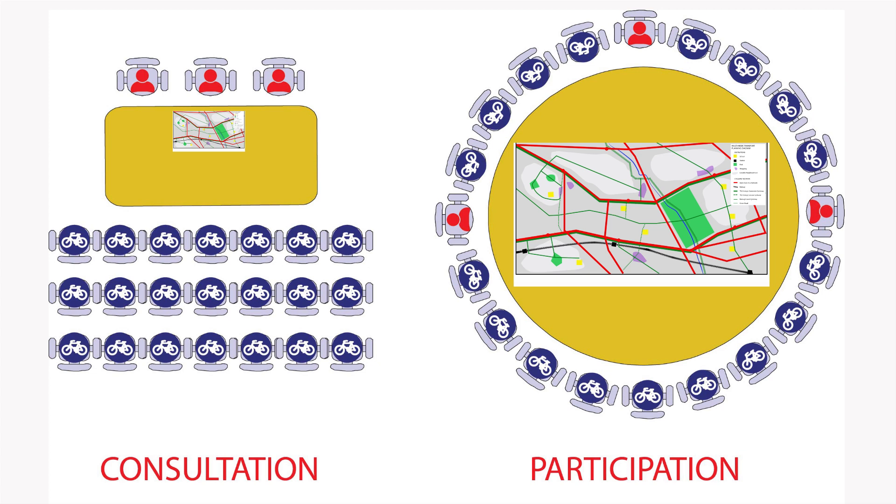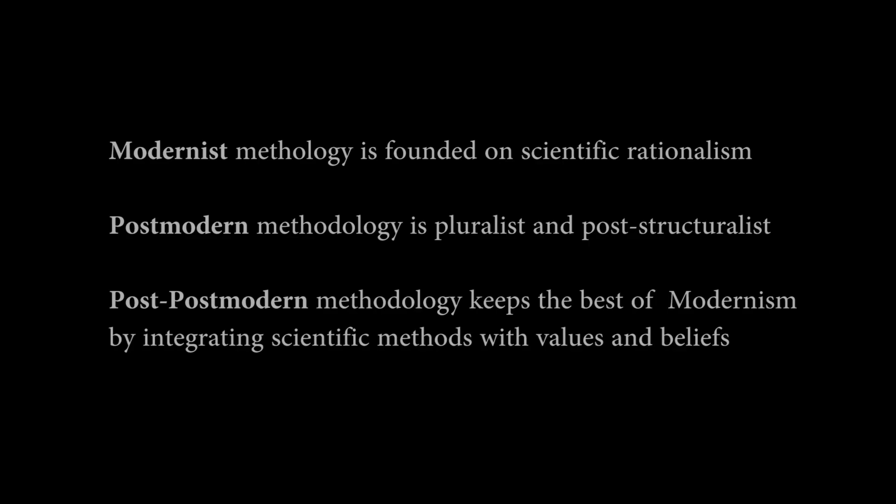The traditional four-step predictive model can be seen as modernist, the travel demand management approach as post-modern, and four-step cycle network planning as post-post-modern, because it rests on a belief in sustainability.